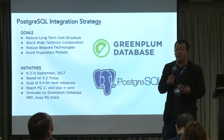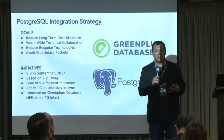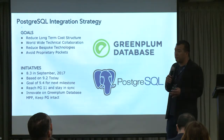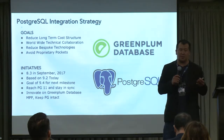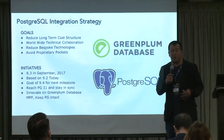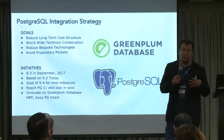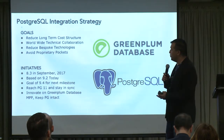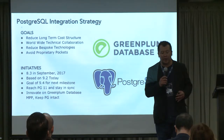Some of our major initiatives with our Postgres integration effort have been to up-level the Postgres version within Greenplum to be current. Ten years ago when Greenplum started, many competitors based their products off Postgres and basically forked from it. For example, a competitor called Netezza forked at Postgres 7; we started a couple years later and were able to fork at 8.2, and for the last 10 years Greenplum has primarily been built on a Postgres 8.2-based implementation.